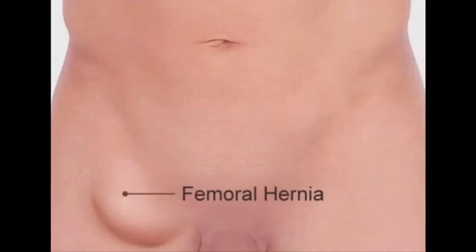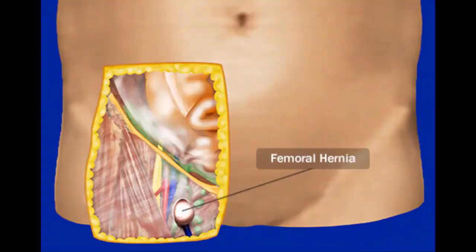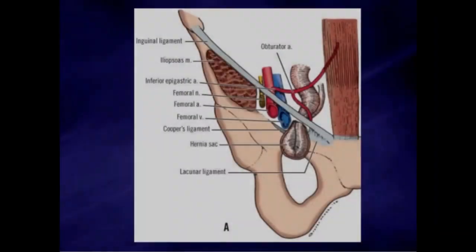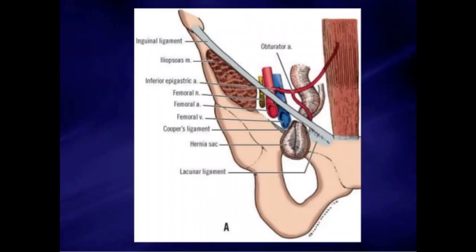A femoral hernia is defined as a condition in which part of an organ is displaced and protrudes through the wall of the cavity containing it. In femoral hernia, part of the bowel pushes into the femoral canal underneath the inguinal ligament. This creates a lump or bulge in the area of the femoral triangle and requires surgical intervention to treat.